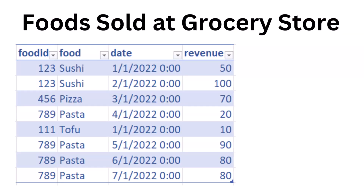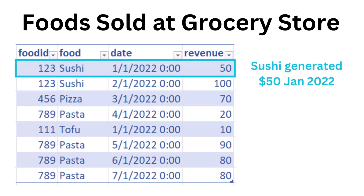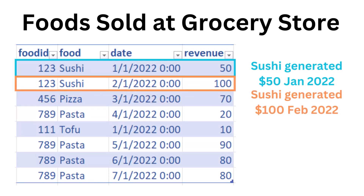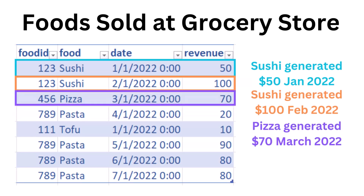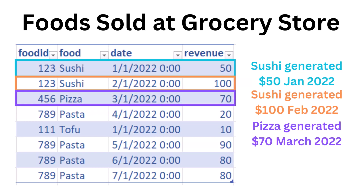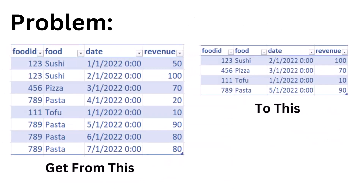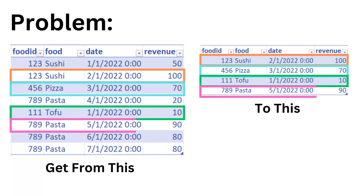Suppose that you have a table of different foods sold at a grocery store, and it shows you how much money each food generated individually each month. Ignore the fact that this says January 1st or February 1st — that's just a placeholder for the entire month. So we would read the first row as: sushi generated a revenue of $50 for the month of January 2022. The next row shows sushi generated $100 in February 2022, and pizza generated $70 in March 2022. The goal is to reduce that table to only show each food and their most profitable month, with the amount generated. For example, sushi's best month was February at $100, and pasta's best month was May at $90.